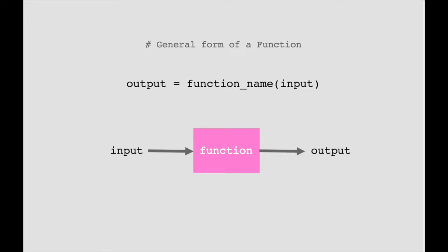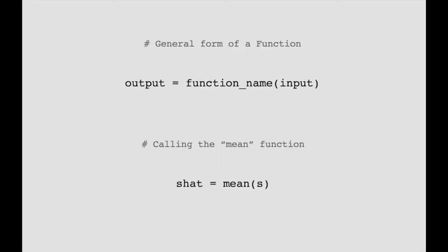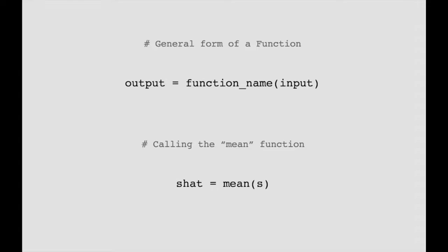Usually, the code has this general form: output equals function name, open paren, input, close paren. To compute the average score, we call the mean function: S_hat equals mean(S). So S is the input object that contains the raw scores, and S_hat is the output object that contains the average value. The mean function takes S as the input and returns S_hat as the output.